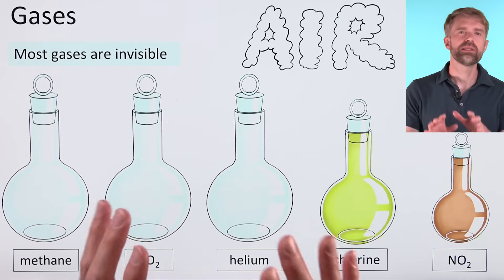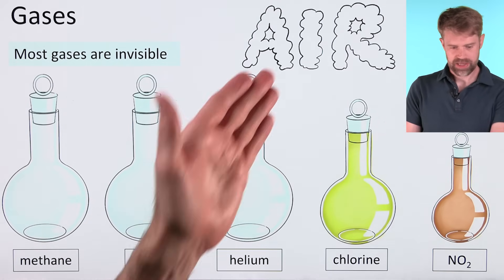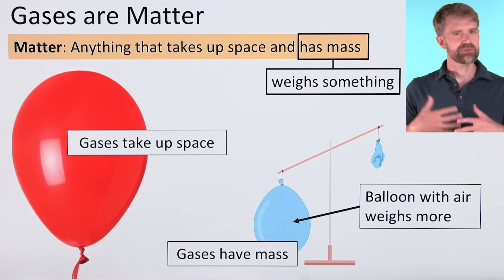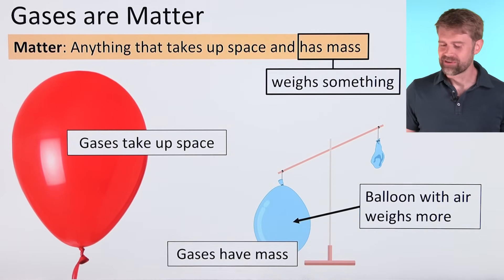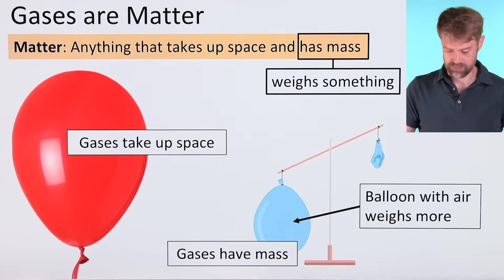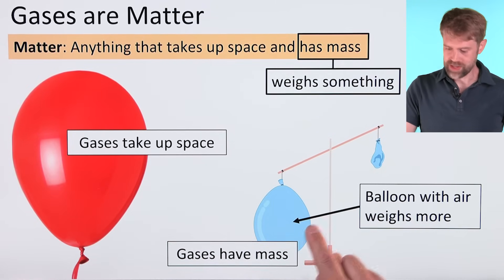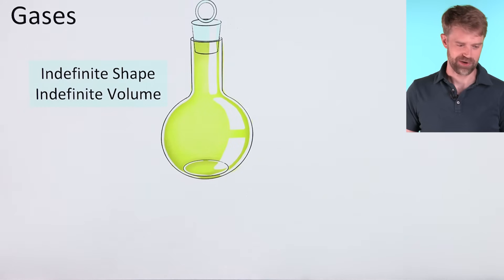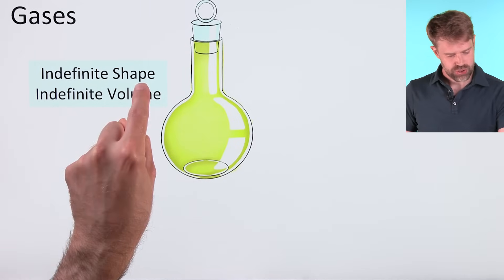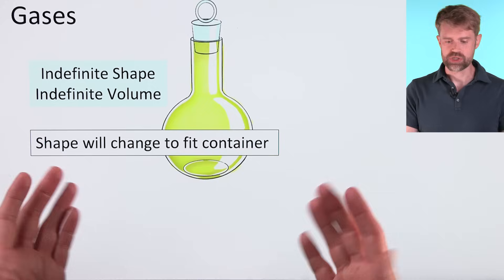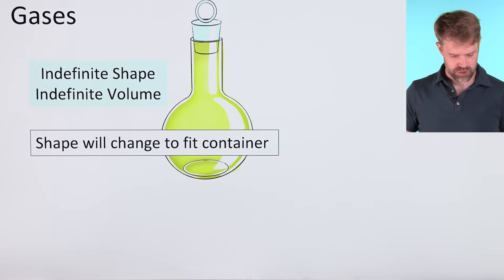Gases can be a little bit weird because most of them are invisible, like air. Only a few gases have a color that you can see. Sometimes people feel that gases aren't really matter, but they definitely are. Gases take up space. Think of this balloon. And gases have mass. They weigh something. A balloon full of air weighs more than an empty balloon. So gases fulfill both of these characteristics. They definitely matter. For some specific characteristics, a gas has an indefinite shape and an indefinite volume. Like a liquid, the shape of a gas will change to fit any container that it's in. So that's why the shape is indefinite.